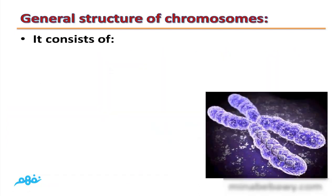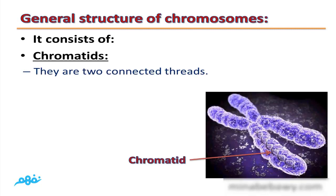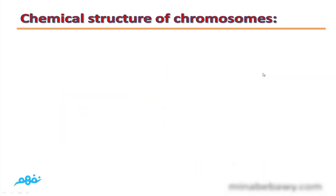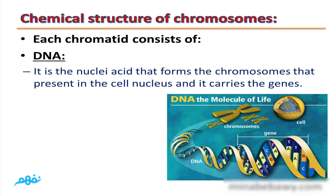General structure of chromosomes: chromosomes consist of chromatids, which are two connected threads, and a centromere. The point of intersection between the two chromatids is called the centromere. Each chromatid consists of DNA — the nucleic acid that forms the chromosomes present in the cell nucleus — and it carries the genes and proteins. So the chemical structure of chromosomes is DNA and protein.